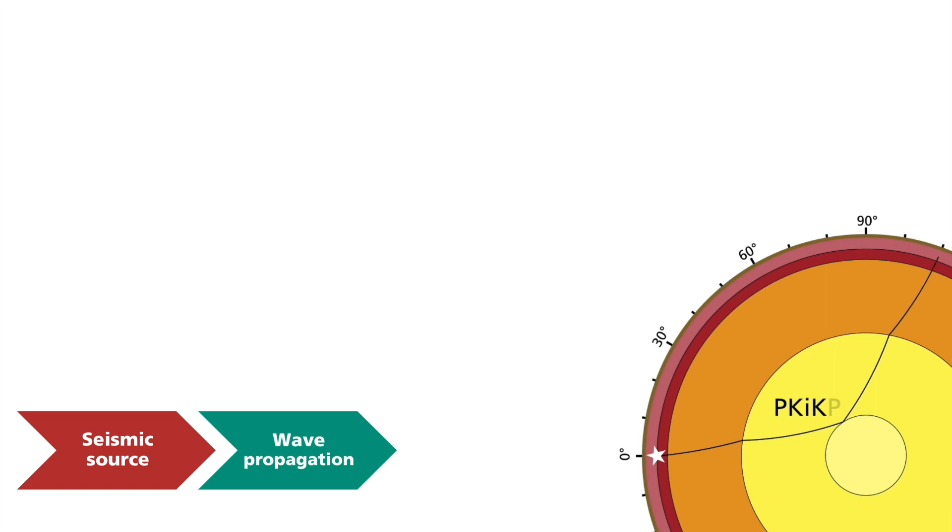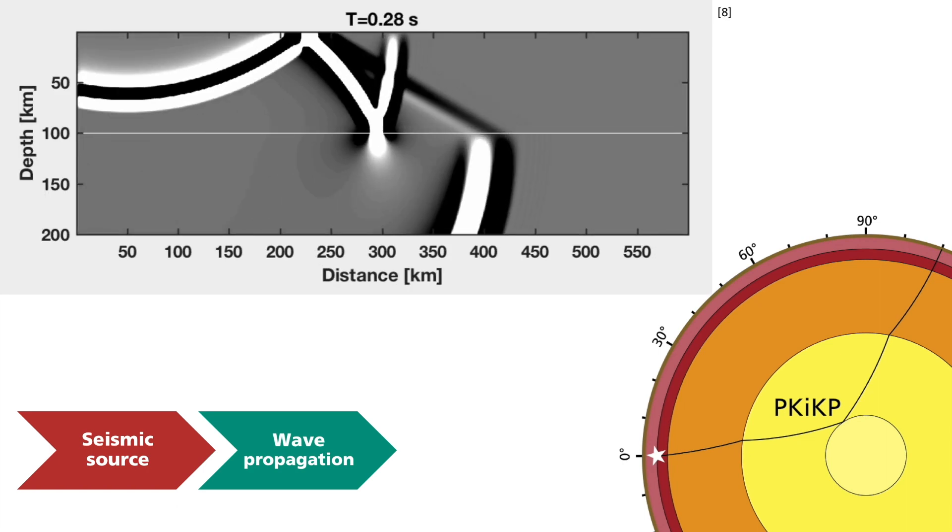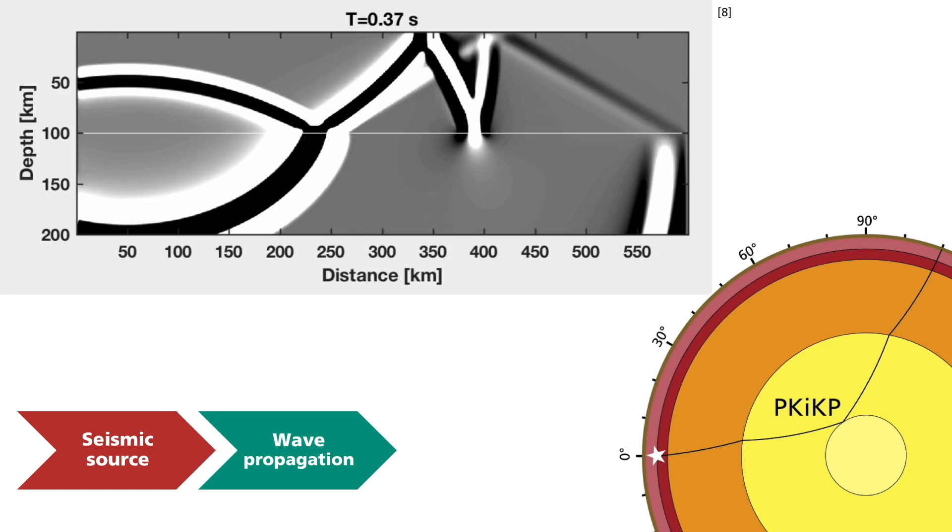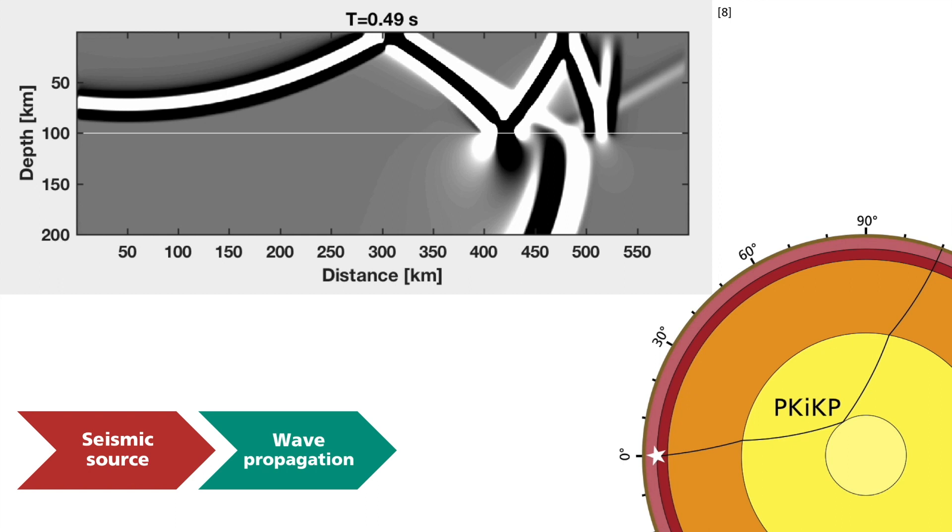In order to investigate near-surface structures, not only the path can be used, but the entire wave field can be used. The animation shows the simple case of two homogeneous layers. In each of the layers, the seismic waves propagate at different velocities.